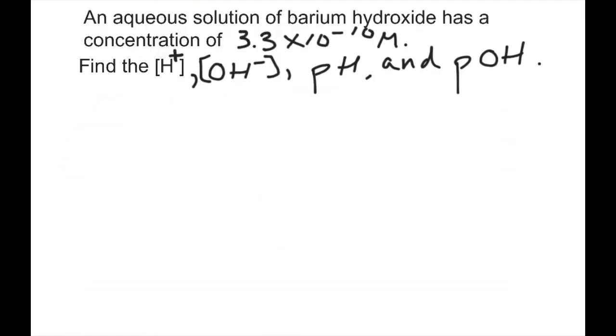We have an aqueous solution right here of barium hydroxide. It has a concentration of 3.3 times 10 to the negative 10 molarity, big M. Find those guys. Find H-plus, OH minus, pH and POH. Typical quiz question. Now, what are you going to do? You're going to pause the video really quick, and we'll see how we do later on.